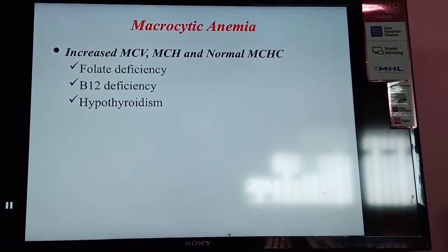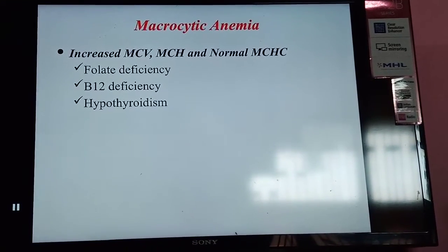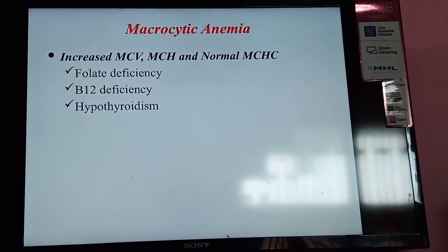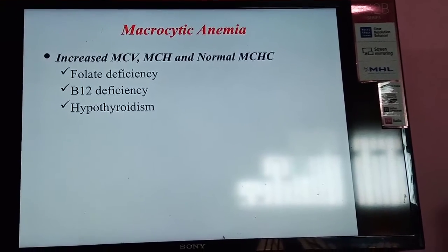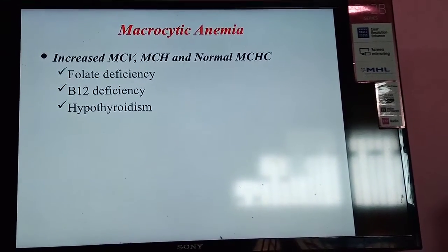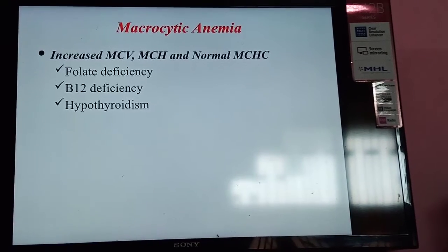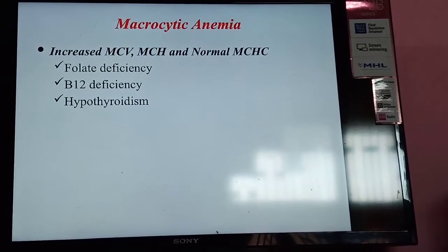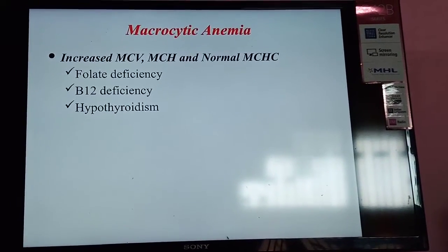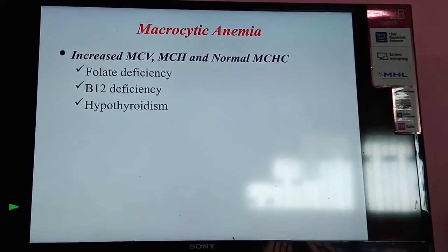Next is macrocytic anemia, in which MCV is increased. MCH may be normal, increased, or decreased. Macrocytic anemia is usually seen in folic acid deficiency, B12 or cobalamin deficiency, and hypothyroidism.